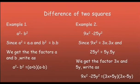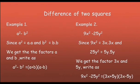Difference of two squares. Example number 1: a squared minus b squared. Since a squared equals a times a, and b squared equals b times b, we get the factors a and b, and write a squared minus b squared equals the quantity a plus b times the quantity a minus b. Just write the two factors separately with positive and negative signs.